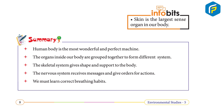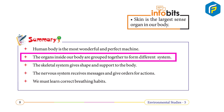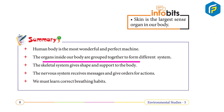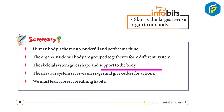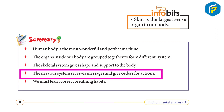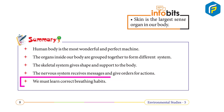Skin is the largest sense organ in our body. Summary: the human body is the most wonderful and perfect machine. The organs inside our body are grouped together to form different systems. The skeletal system gives shape and support to the body. The nervous system receives messages and gives orders for actions. We must learn correct breathing habits.